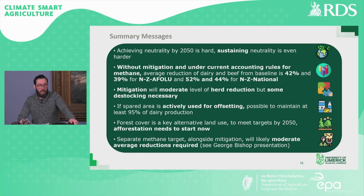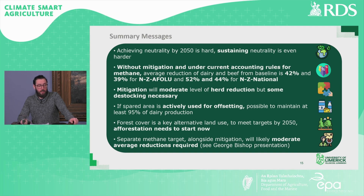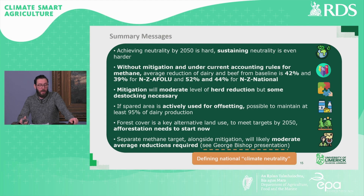Mitigation will moderate the level of herd reduction required, however some destocking will be necessary. If spared area is actively used for offsetting, it is possible to maintain at least 95% of dairy production. Forest cover is a key alternative land use — to meet our targets by 2050, afforestation needs to begin now. Separate methane targets alongside mitigation will likely moderate the reductions required. For more on separate methane targets and defining national climate neutrality, please see the George Bishop presentation.